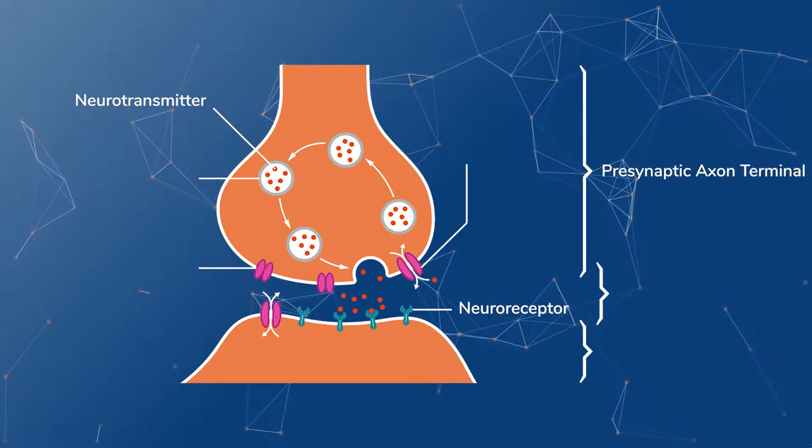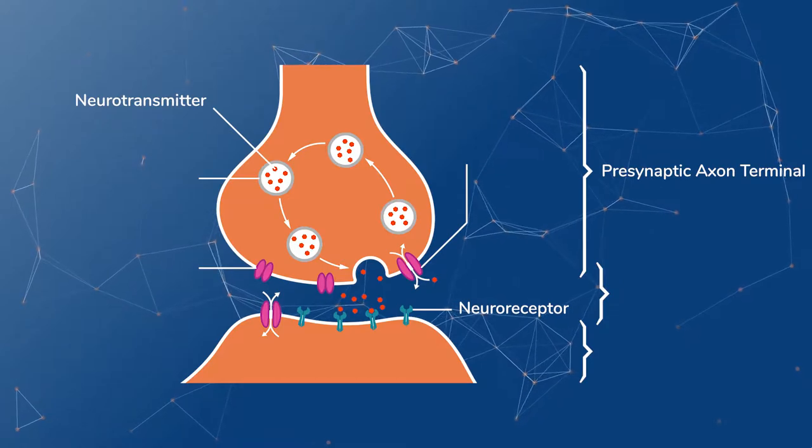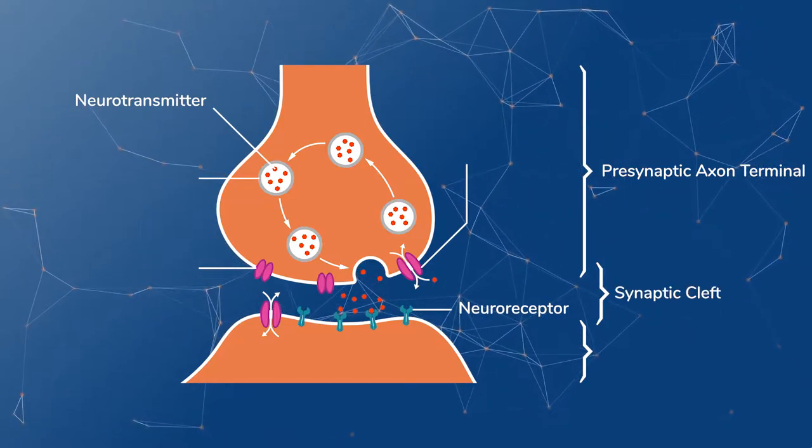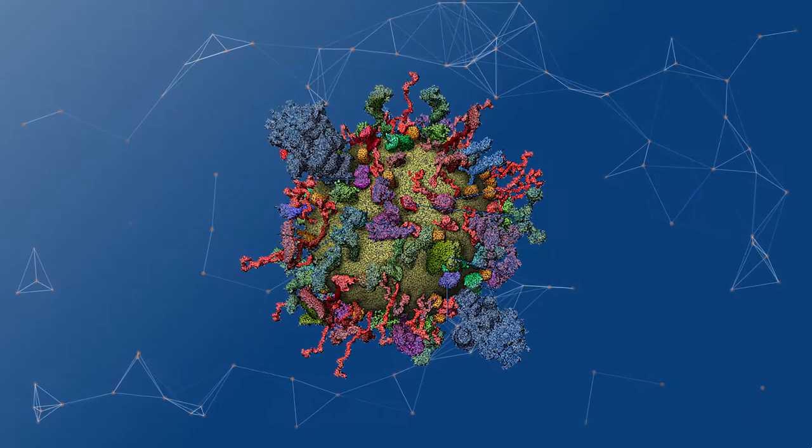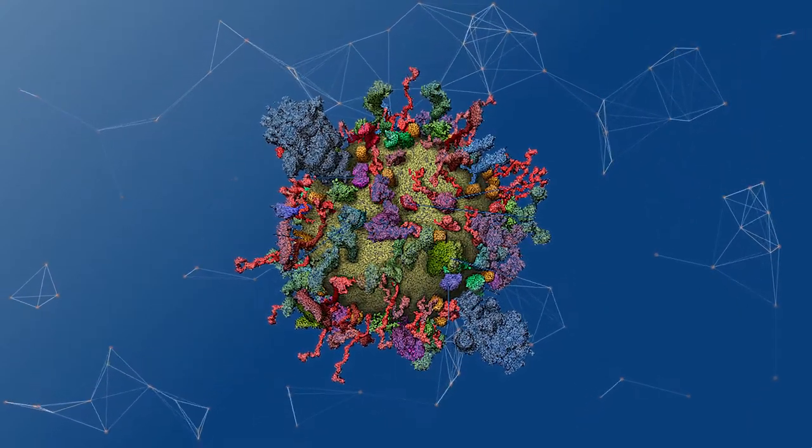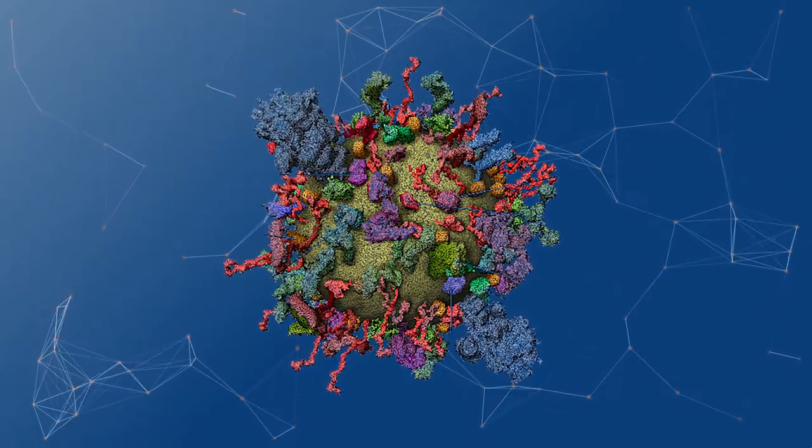So when a signal reaches the axon terminal of the presynaptic neuron, it releases a packet of neurotransmitters into the synaptic cleft. This packet is called a synaptic vesicle, and to illustrate how complicated neurons are, here is a close-up view of a vesicle. This diagram actually omits a third of the proteins, so real vesicles are even more crowded.